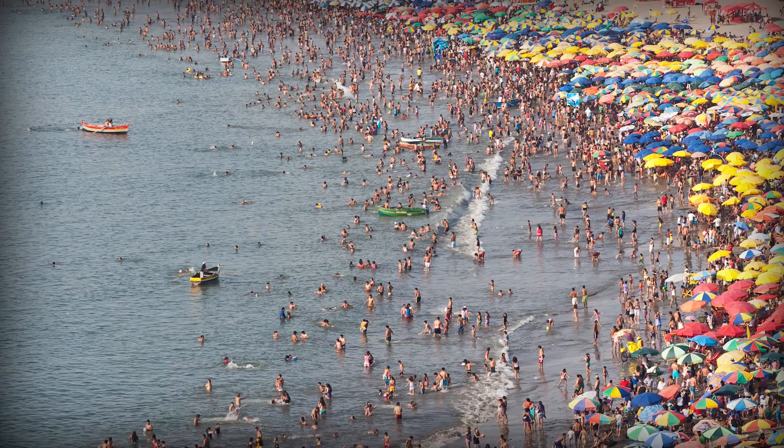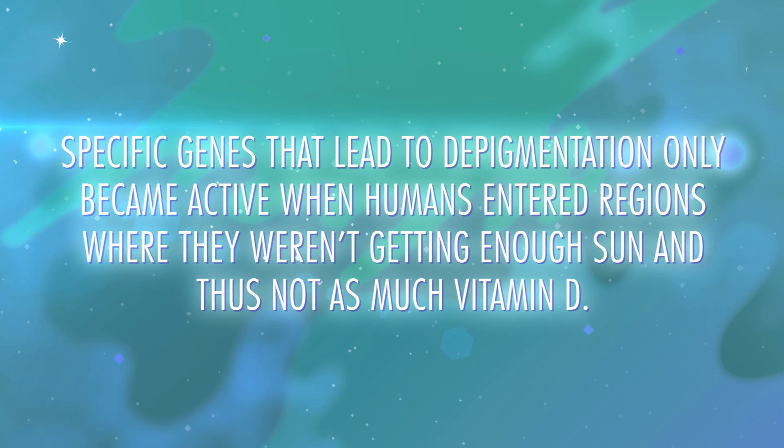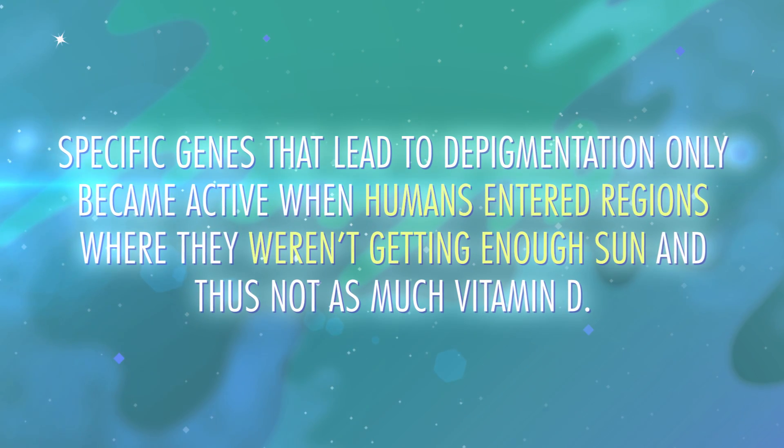One of the most prominent traits by which we have historically distinguished human from human is skin color, which is caused by the melanin levels in our skin. Melanin is useful because it dissipates UV radiation and helps prevent the occurrence of skin cancer, particularly useful in areas with lots of sunshine. A hundred thousand years ago, every human on the face of the earth was African, and melanin levels were roughly the same. It was only when we spread out into other regions 64,000 years ago, into different climates with differing degrees of UV radiation, that that slowly began to change. Specific genes that led to depigmentation only became active when humans entered regions where they weren't getting enough sun and thus not as much vitamin D.